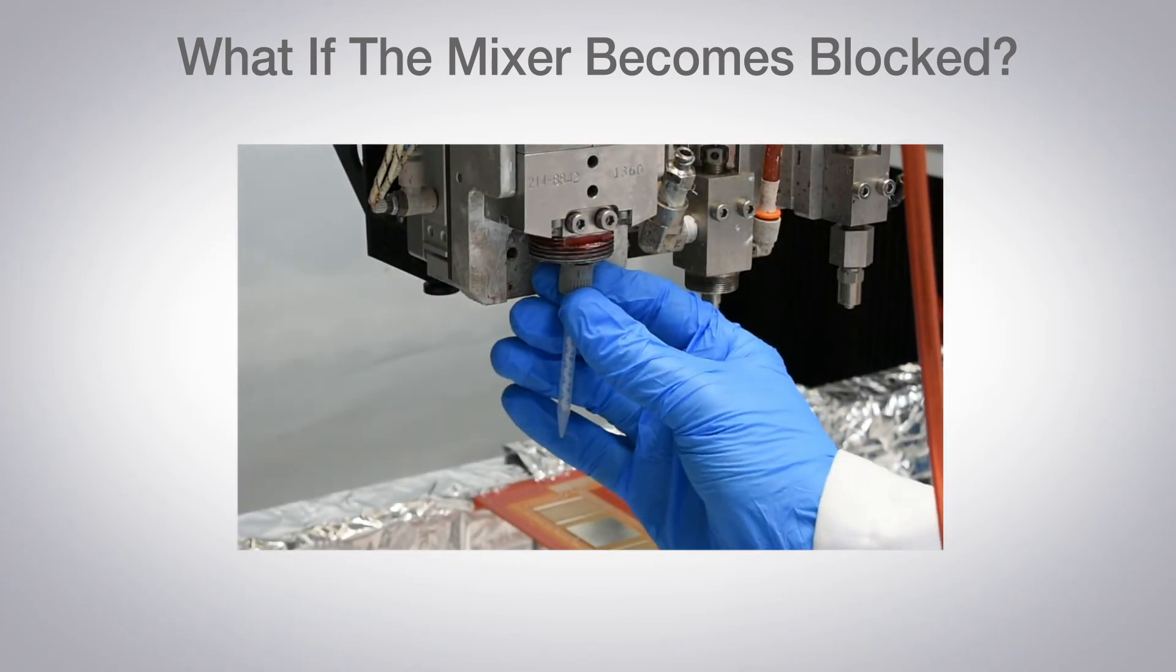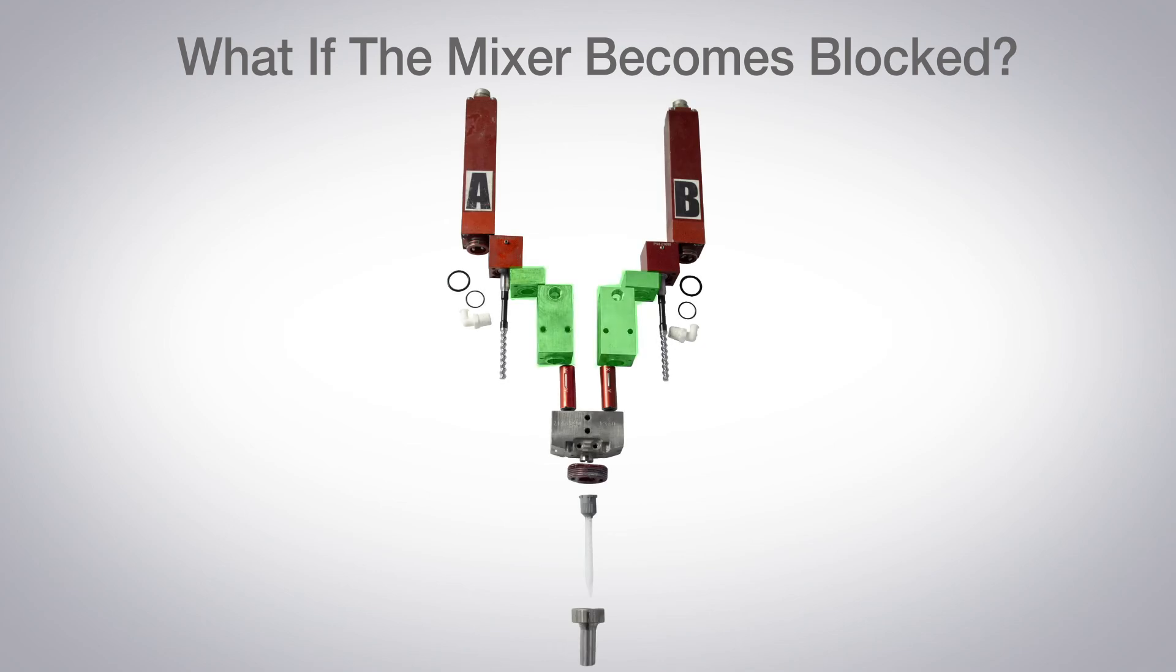The progressive cavity pumps are equipped with pressure transducers that sense back pressure build up to prevent the mixed material backing up into the cavities. The machine will error out rather than attempt to dispense material, preventing blockages from causing any significant damage.